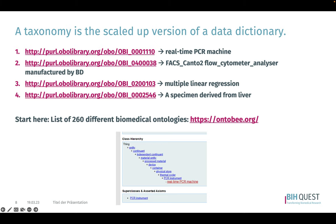These built-in hierarchies enable non-humans to classify and therefore understand the information provided. For example, real-time PCR machines have the entire hierarchy presented. Certain ontologies, like the OBI, have a clear description for machines that can be used, but also for statistical processes or even specimens.